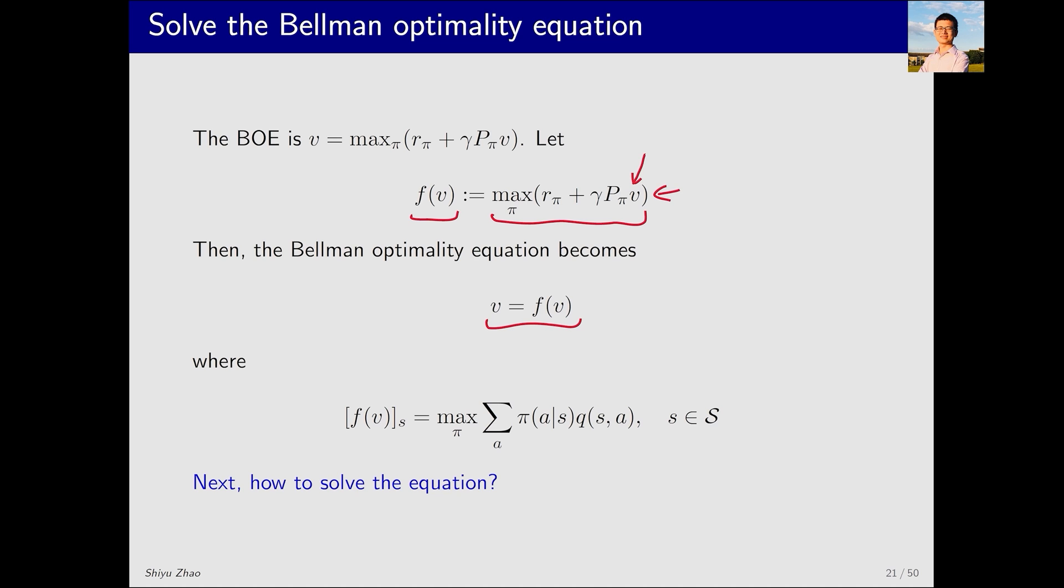Moreover, this f is actually a vector where, for a given state s, its elementwise form is as this. To solve the Bellman optimality equation, we just need to solve this equation.